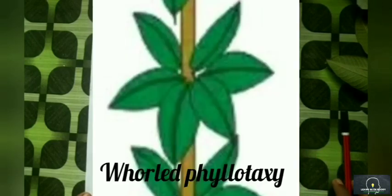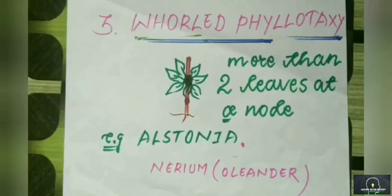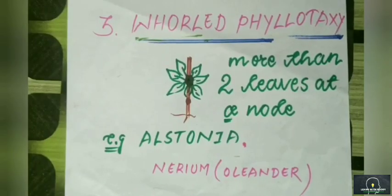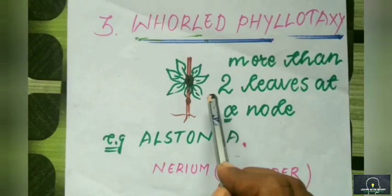Now let's learn whorled phyllotaxy. In whorled phyllotaxy, more than two leaves arise at a node.